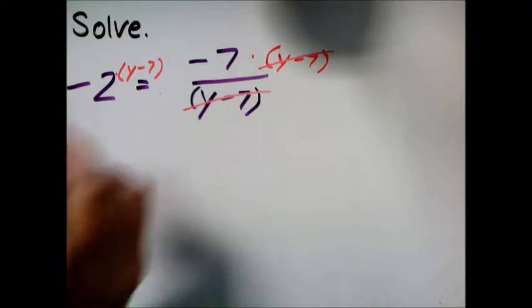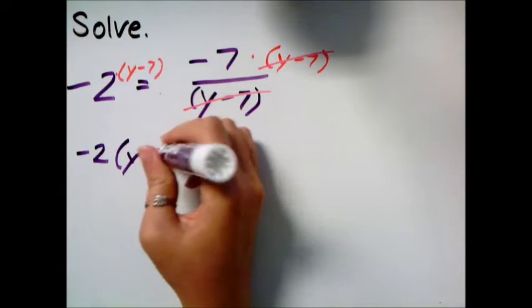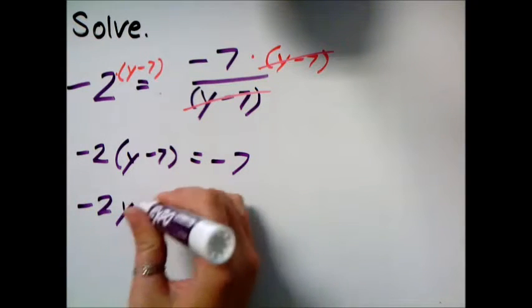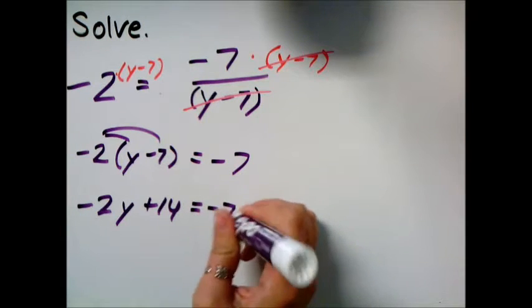And so I can distribute negative 2, is now multiplied by the whole thing, y minus 7. And the other side equals negative 7. So I get negative 2y plus 14, a negative times a negative, equals negative 7.